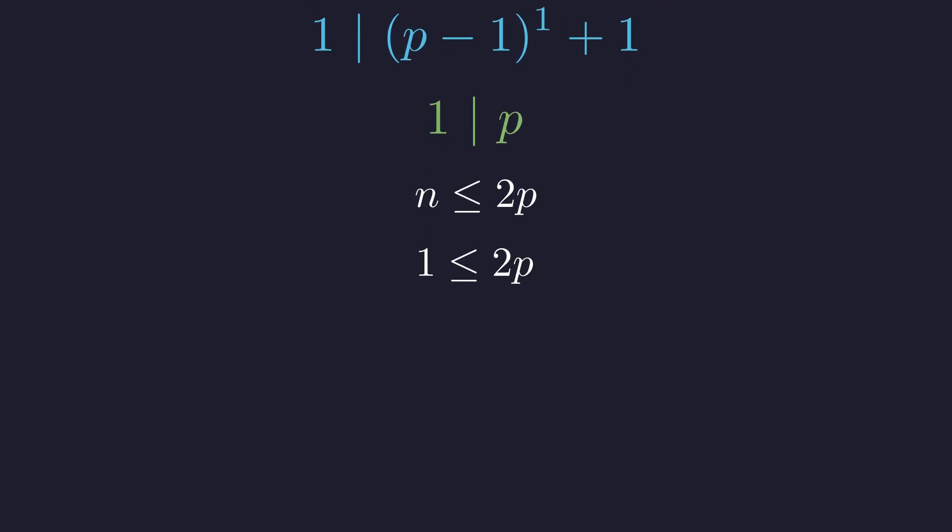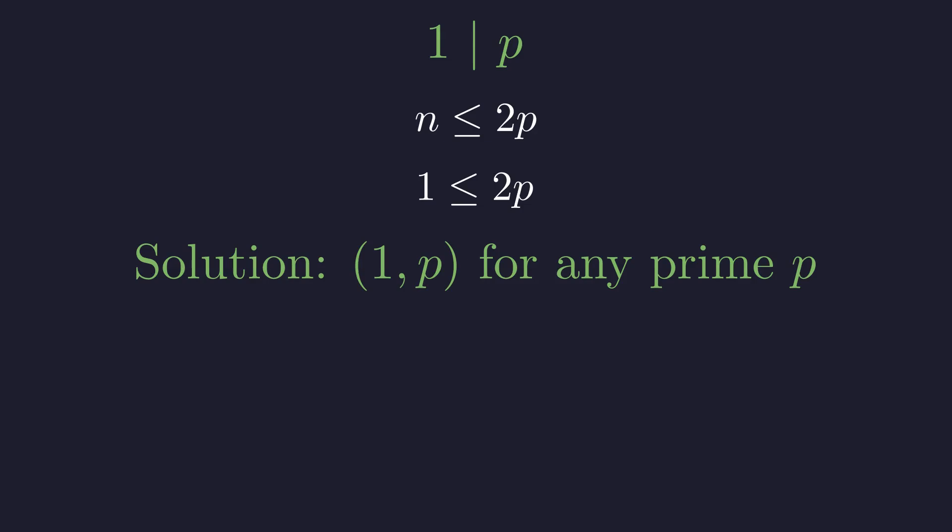For n equals 1, this becomes 1 ≤ 2p, which holds for any prime p. Thus, the pair (1, p) is a solution for any prime p. This constitutes an infinite family of solutions.